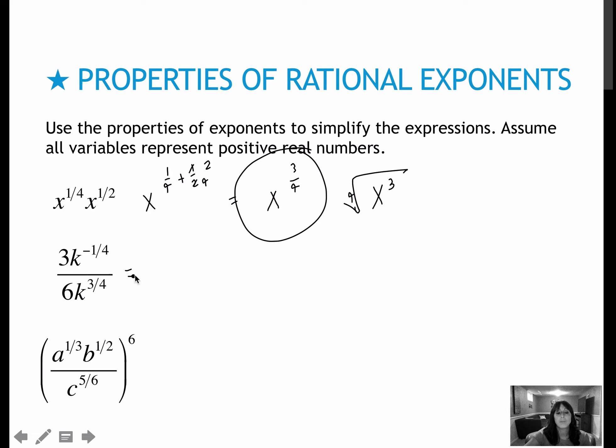For this one, again, I'm reducing, so I would divide the 18 and the 6. I would reduce to three and two, just like I normally would with any fraction. With this situation, I would take negative one-fourth minus three-fourths, which would give me negative four-fourths, or negative one, which tells me that the k to the positive one would go on the bottom. So if you need to write that intermediate step, feel free to write this step in between.